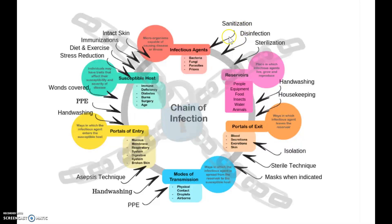I've drawn three arrows here, and those three arrows really represent the three things we can do to reduce the number of infectious agents. The first is to sanitize, which is just your general good old cleaning. If you keep your counters clean, there are fewer microorganisms.